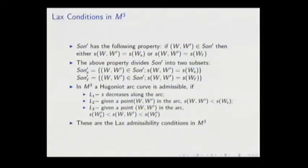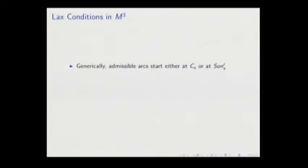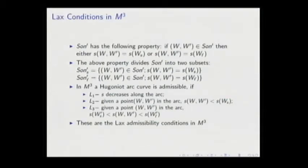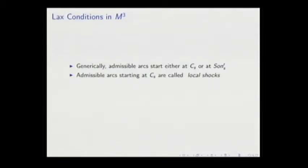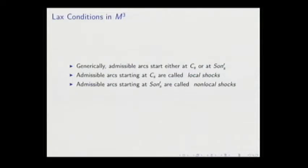These are the Lax admissibility conditions in the wave manifold. Because of condition L2, generically admissible arcs start either at Cs or at sonic prime S. Admissible arcs starting at Cs are called local shocks. Admissible arcs starting at sonic prime S are called non-local shocks.